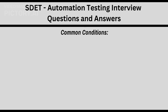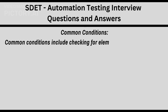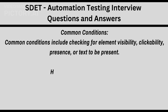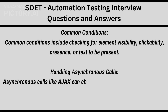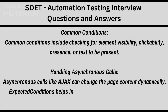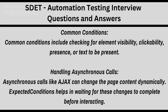Common conditions include checking for element visibility, clickability, presence, or text to be present. Handling asynchronous calls: asynchronous calls like Ajax can change the page content dynamically. ExpectedConditions helps in waiting for these changes to complete before interacting.